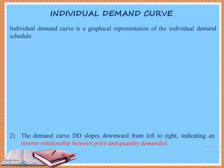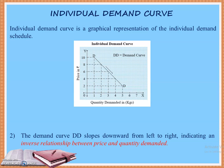Now we are going to understand the same concept with the help of an individual demand curve. Individual demand curve is a graphical representation of the individual demand schedule — the same table and schedule we discussed a few moments ago. We will use that data to draw a curve so we can easily understand the inverse relationship between commodity price and quantity demanded.